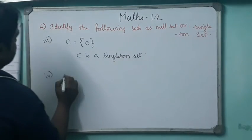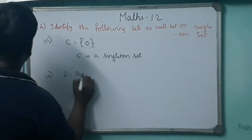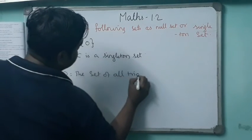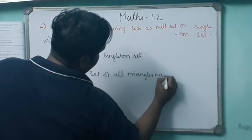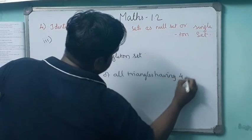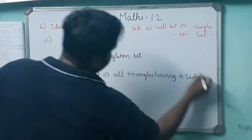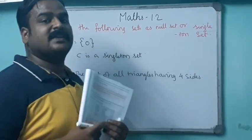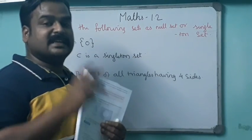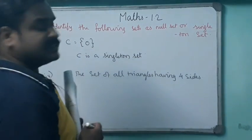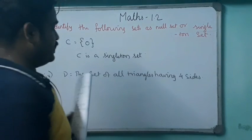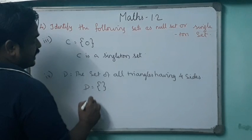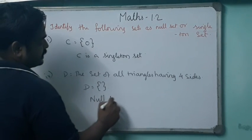The fourth one: set D equals the set of all triangles having four sides. A triangle having four sides has no possibility — four sides would make it a quadrilateral, not a triangle. So there are no such elements. D equals empty set. Set D is a null set.